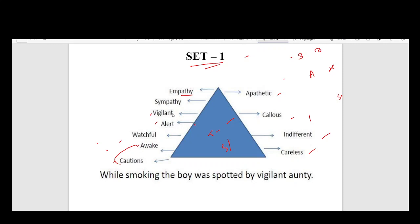Now let's look at an example. While smoking, the boy was spotted by vigilant aunty. What is the appropriate antonym for vigilant? The opposite would be indifferent, careless, or apathetic. These words mean lacking attention or care.